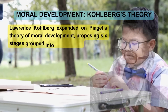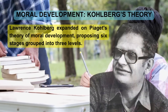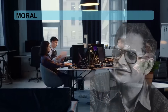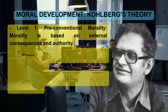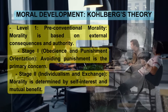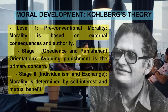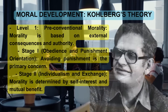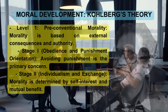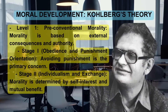Kohlberg's theory of moral development expanded on Piaget's work, proposing six stages grouped into three levels. Level 1 is Pre-conventional morality, where morality is based on external consequences and authority. Stage 1 is obedience and punishment orientation — avoiding punishment is the primary concern. Stage 2 is individualism and exchange — morality is determined by self-interest and mutual benefit.